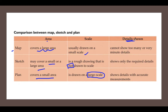In terms of details: a map cannot show too many details — for example, a map of India shows only different city names or state names. A sketch shows only the required details, like the path from school to home. A plan shows details with accurate measurements — if the principal's office is large it shows it as large, if small then small — all details are shown with accurate measurements.